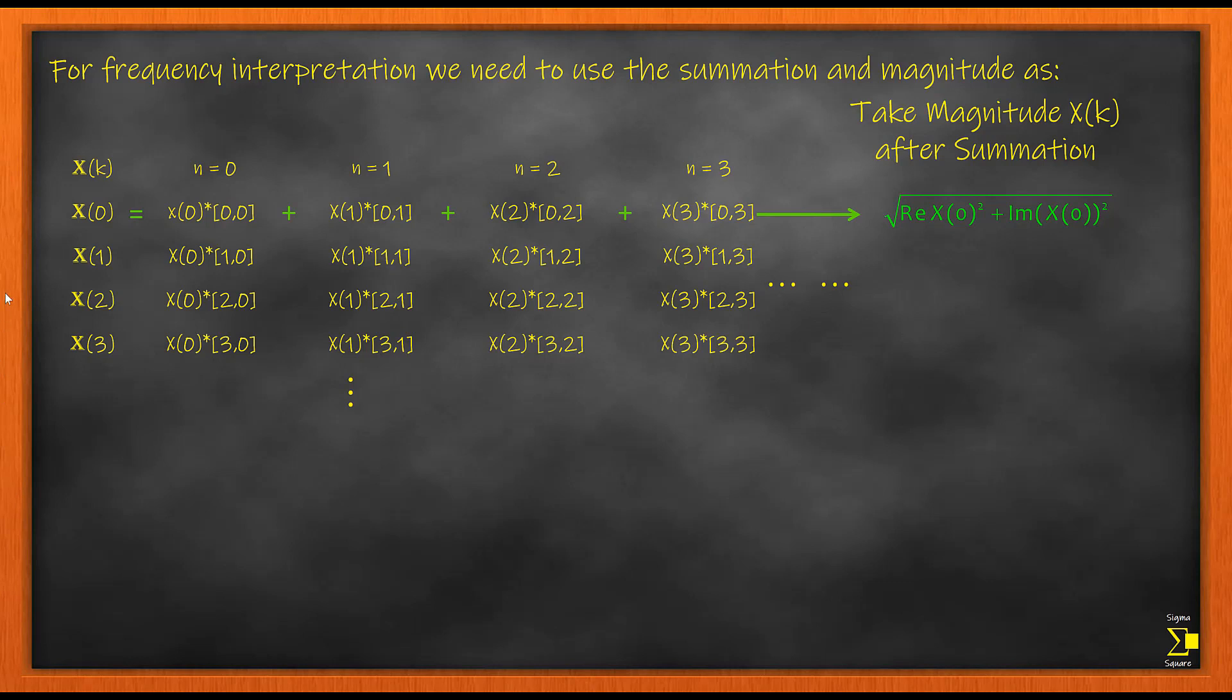What we see here is I am summing all the terms in the first row to get my Fourier Transform for k equal to 0. After summation, I am taking the magnitude for X(0) by using this magnitude formulation.